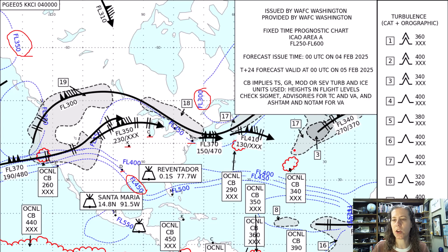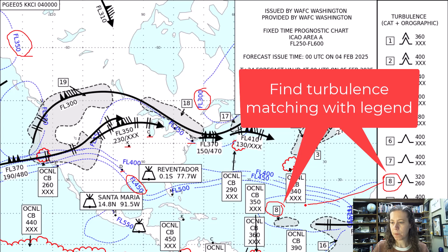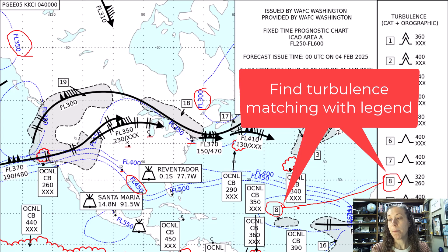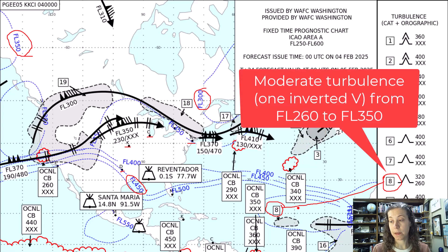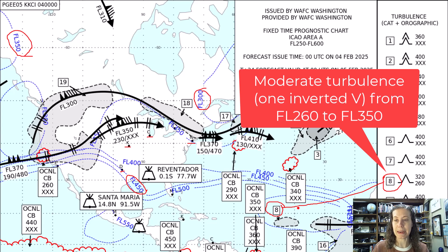If you want to know about turbulence in a certain area, let's look at area eight as an example. You just find the corresponding turbulent entry on the side menu, and it tells you that moderate turbulence is expected between flight level 260 and flight level 320 within that small area number eight.